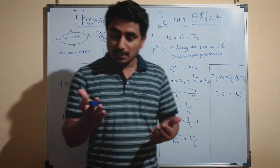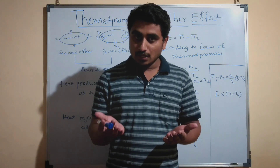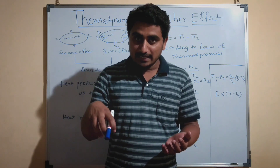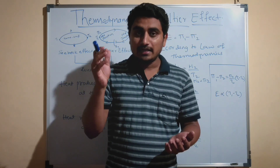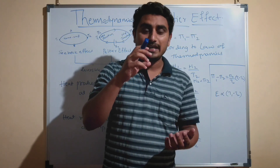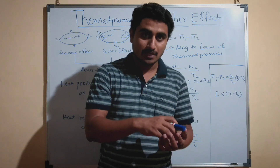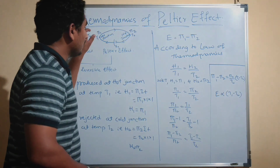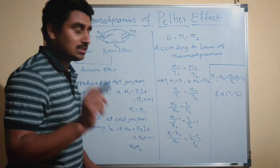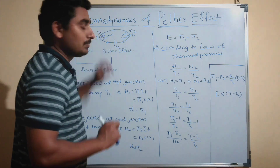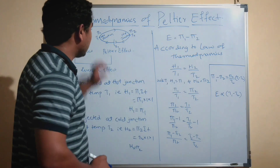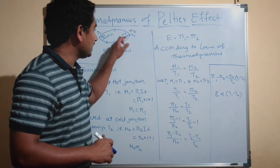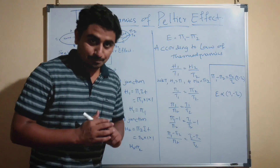A heat engine means there is one source and one sink. From the source, heat is absorbed, it does some work, and the remaining amount of heat is rejected to the sink. In this thermocouple, the amount of heat absorbed from the source — the source being the hot junction — does some work, meaning driving the current in the circuit, and the remaining heat is rejected to the sink. The sink is nothing but the cold junction.